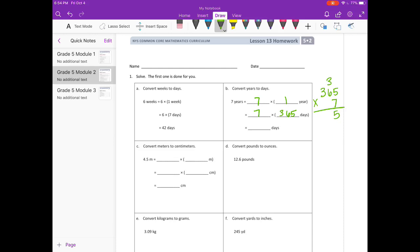7 times 5 is 35, carry the 3. 7 times 6 is 42 plus 3 is 45. And 7 times 3 is 21 plus 4 is 25. So it is 2,555 days.